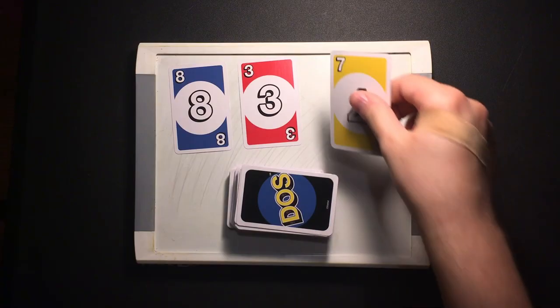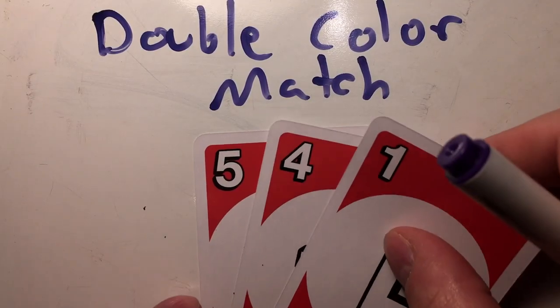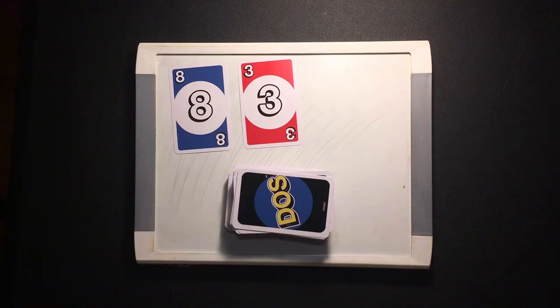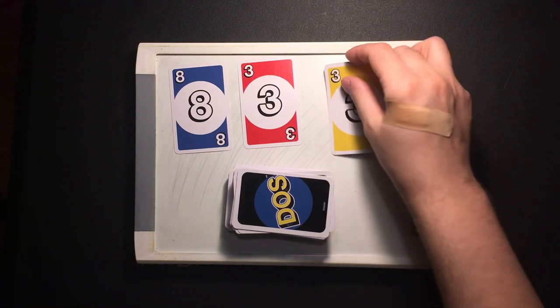To double color match, place any two cards that add up to and are both the same color as a center row card on that center row card. Now when your turn ends, you may place one of your hand cards in the center row and all of the other players must draw one card.